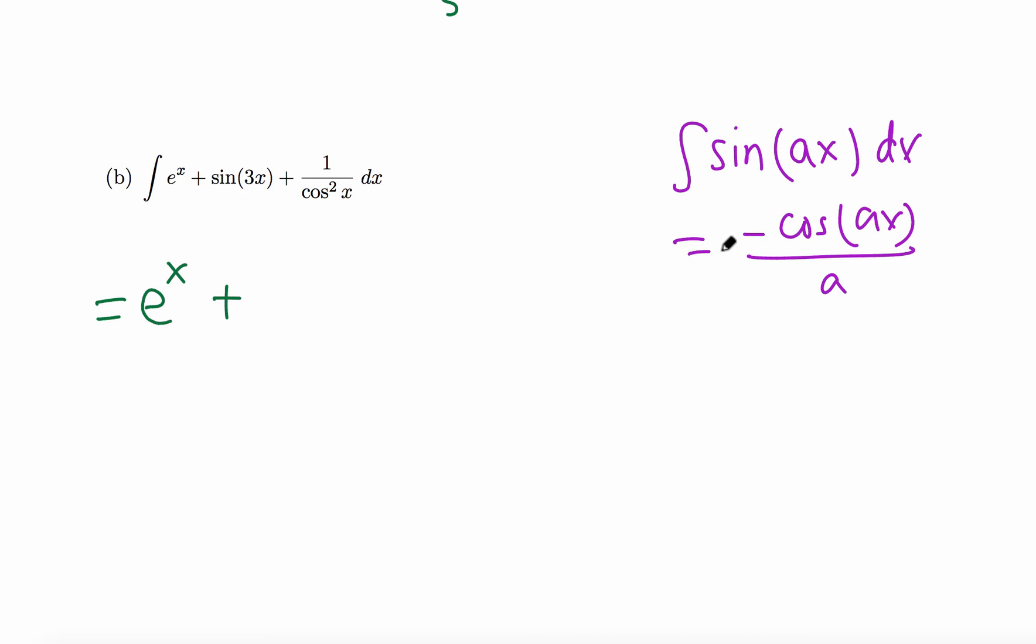So we have in this case negative cosine 3x over 3. Plus 1 over cosine squared—there is no antiderivative of fractions, so we need to get rid of this fraction first. We know that 1 over cosine, the reciprocal of cosine, is secant. So this is the same as secant squared x.